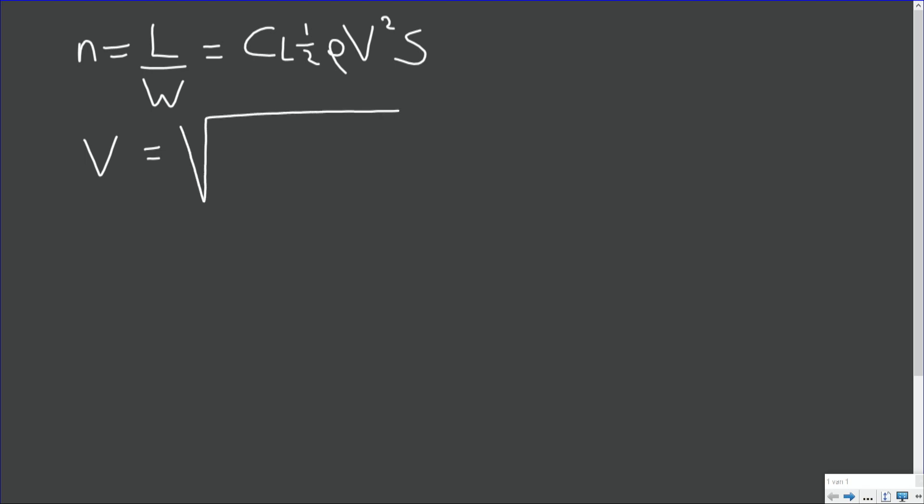If you do that, you get that airspeed is the square root of n times weight over S times 2 over rho times 1 over CL.